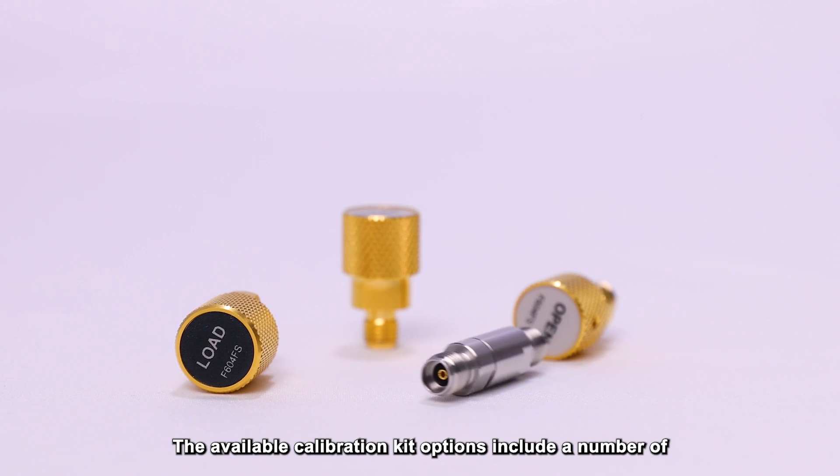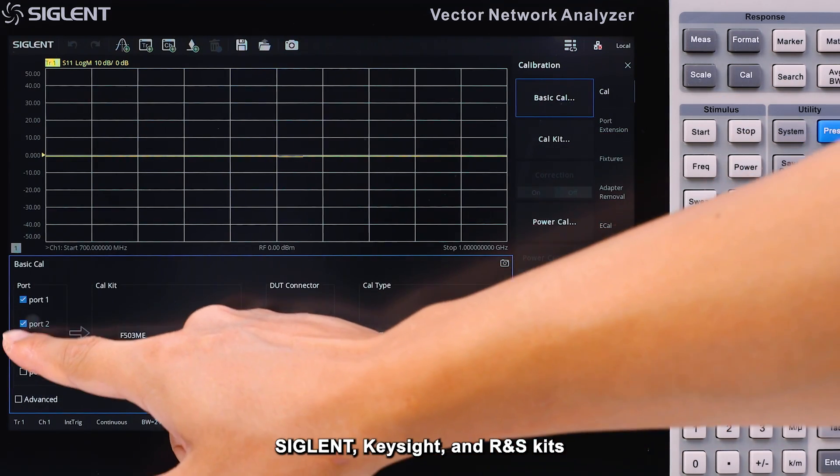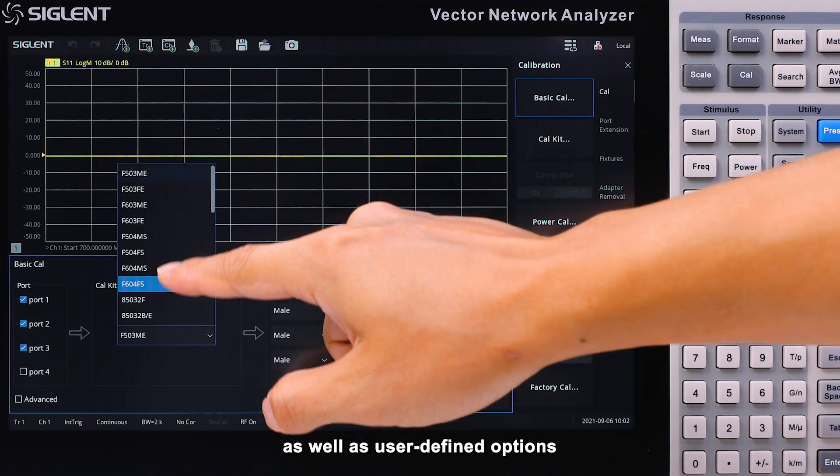Calibration kit options include a number of Siglent, Keysight, and Rohde & Schwarz kits, as well as user-defined options.